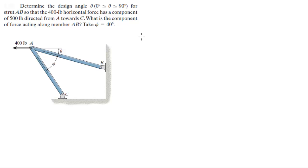All right guys, now we're going to do this problem which says determine the design angle theta for strut AB so that the 400 pound horizontal force has a component of 500 directed from A towards C. This force right here has a 500 pound force directed from A towards C.